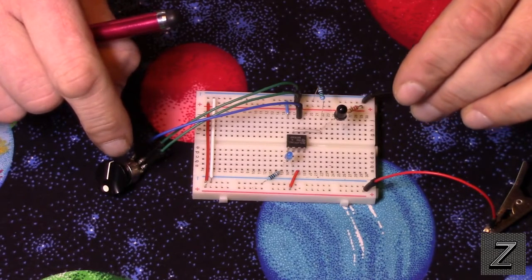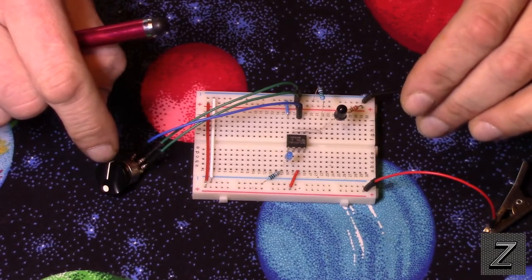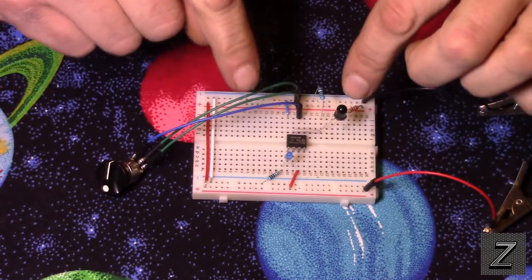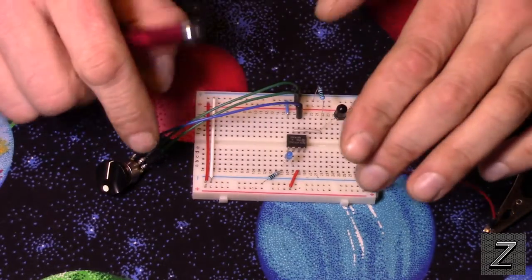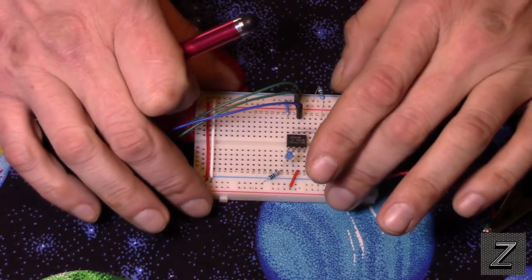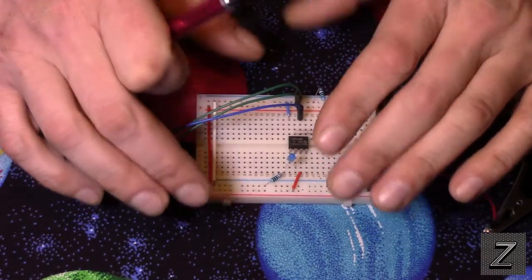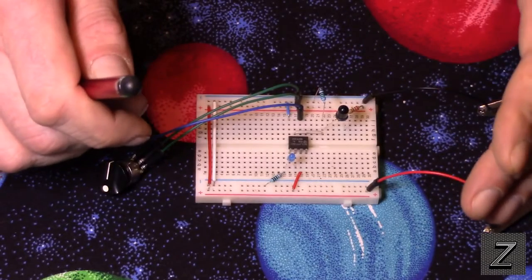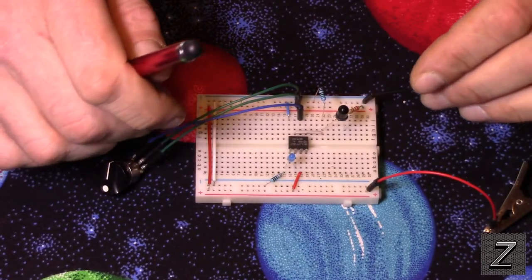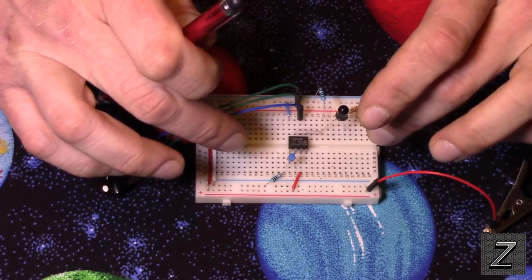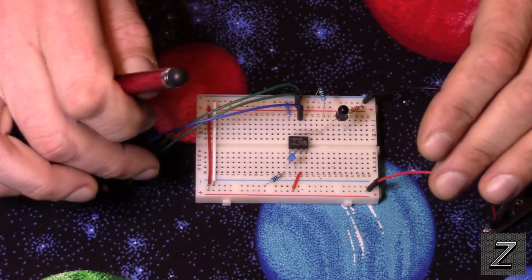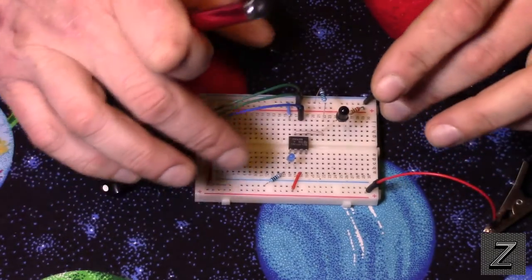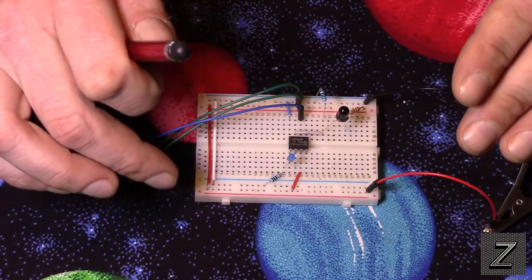But the problem with those boards is the whole thing is there and the detector is mounted to the board. Well let's say you don't want to have that whole board being right next to where you're going to detect the flame. By building your own, you're talking like a dollar if you build your own between all the components and parts, about a dollar.